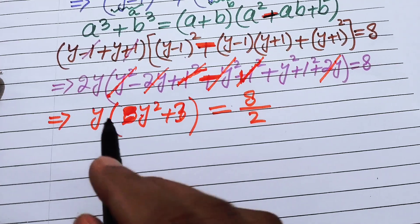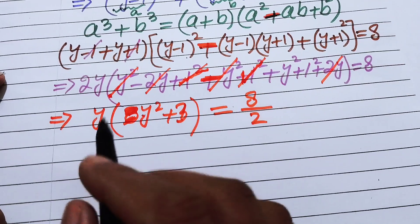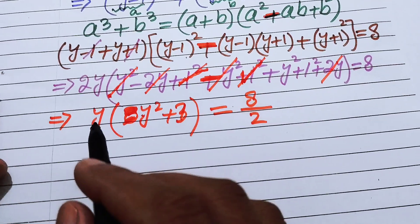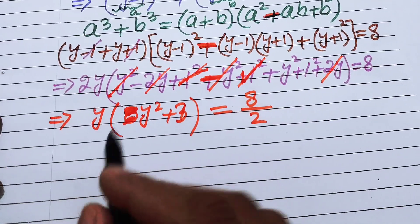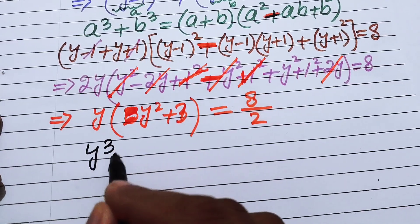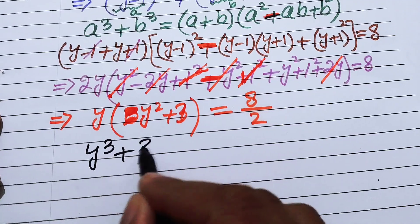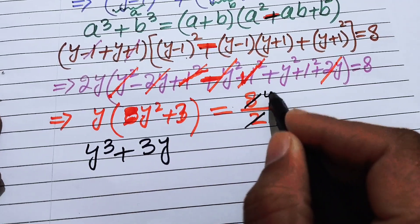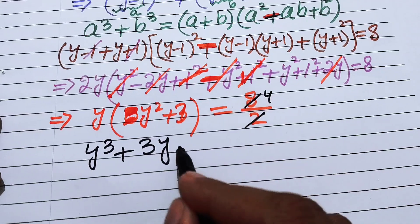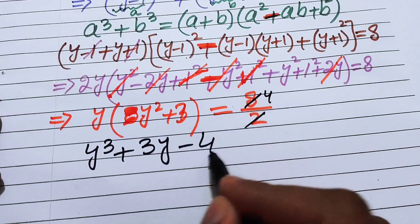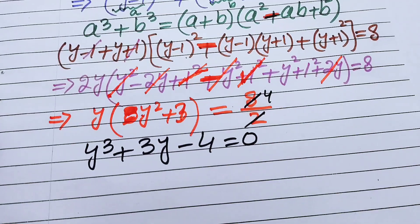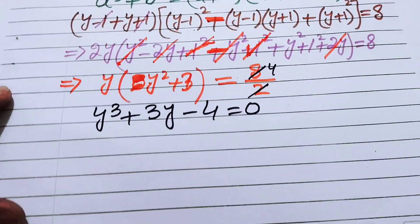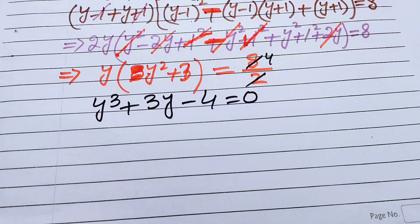Multiplying y through the bracket gives y³+3y = 4. Moving 4 to the left-hand side, the equation becomes y³+3y−4 = 0.